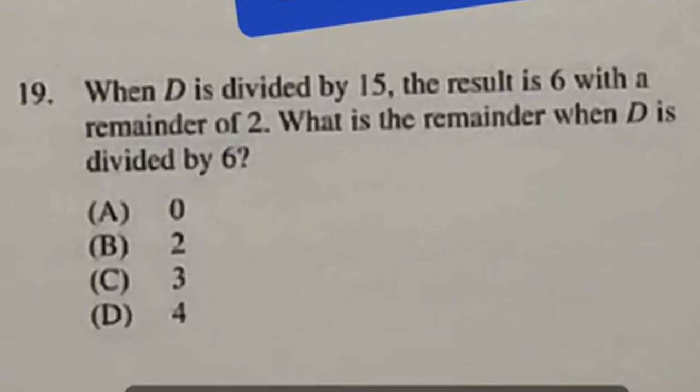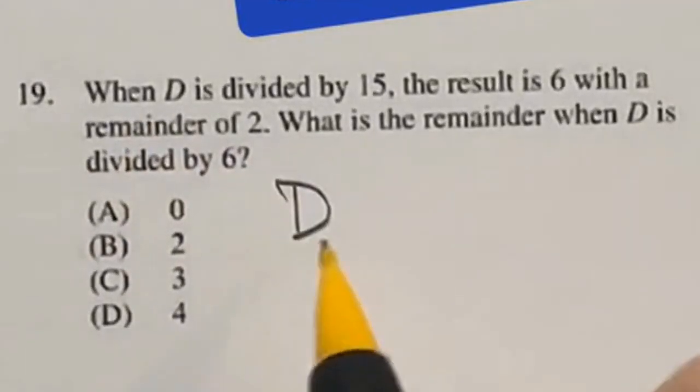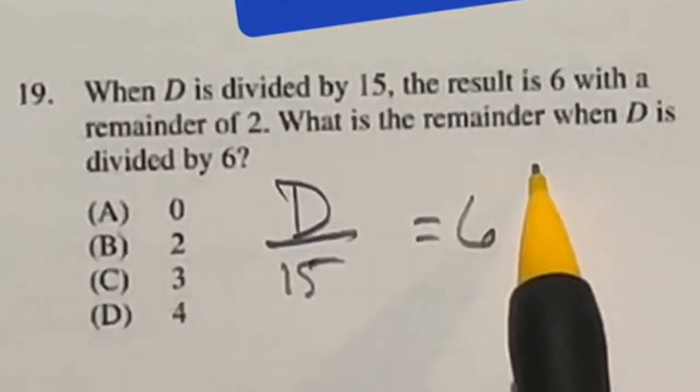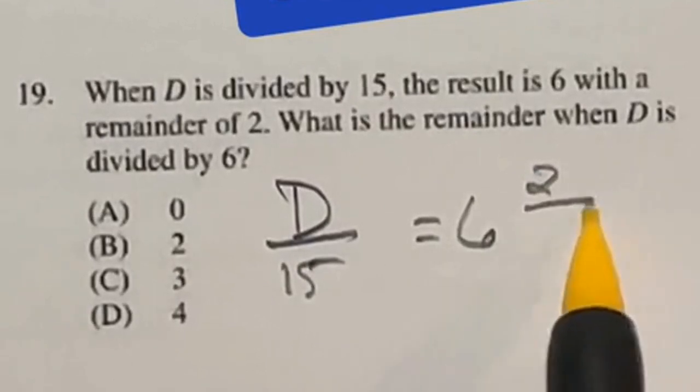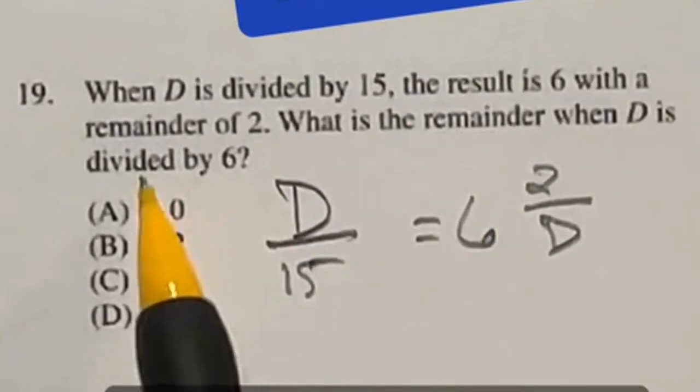I think the wording is more confusing than anything else in this situation. It says when you have D divided by 15, the answer is 6 and then there's still a remainder of 2, meaning there's 2 left over out of whatever that D is. In this case, then it says what is the remainder when D is divided by 6?